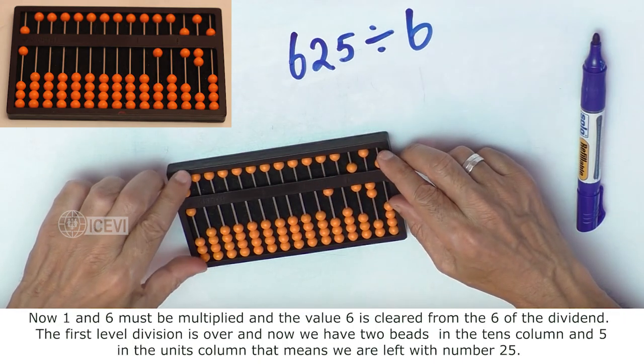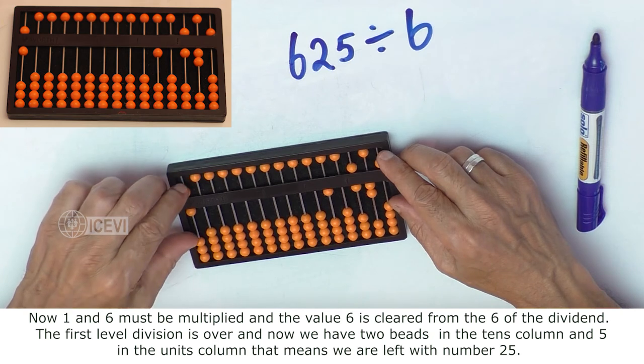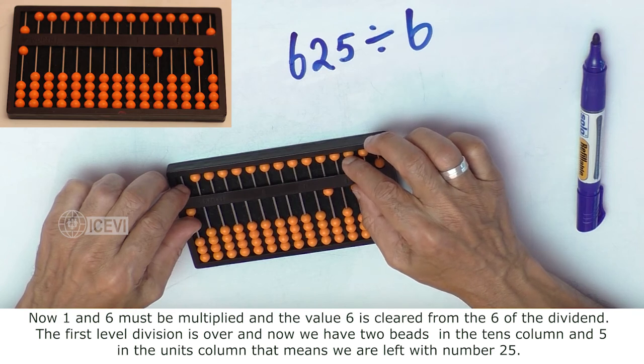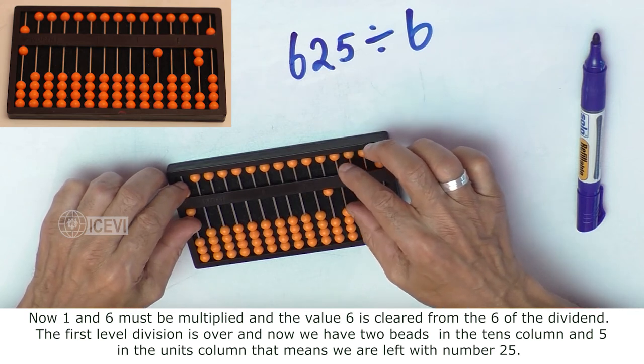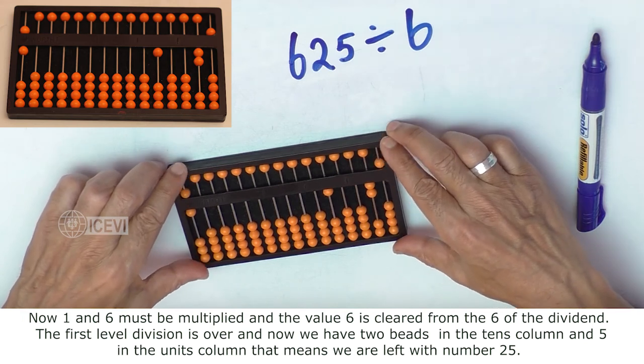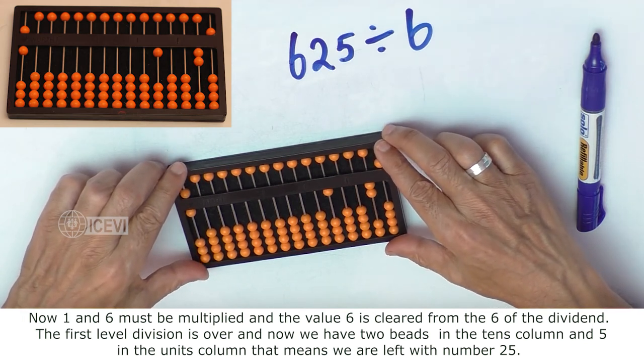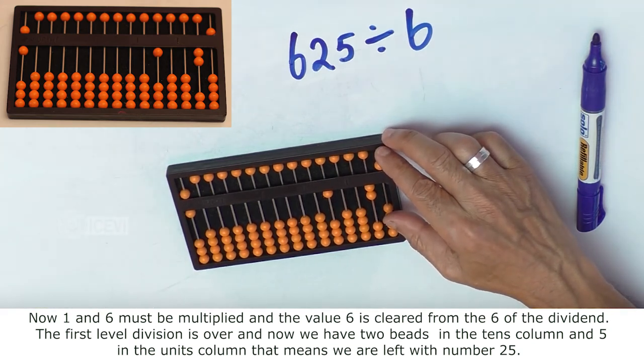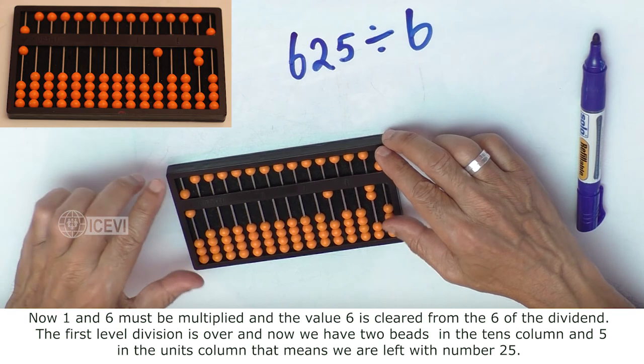Now 1 and 6 must be multiplied and the value 6 is cleared from the 6 of the dividend. The first level division is over and now we have 2 beads in the 10s column and 5 in the units column. That means we are left with number 25.